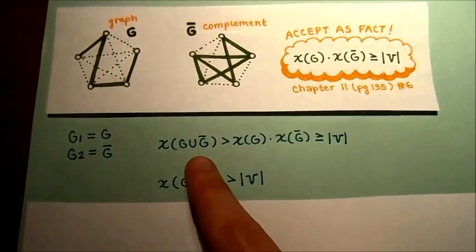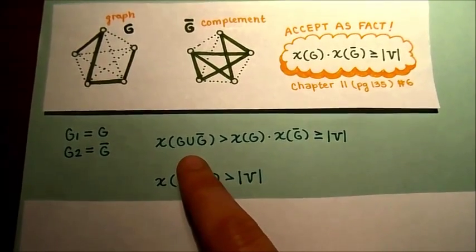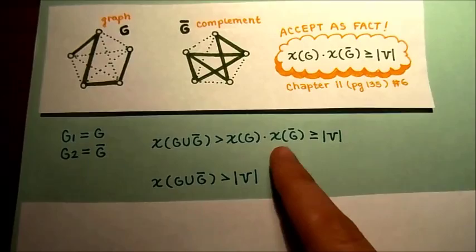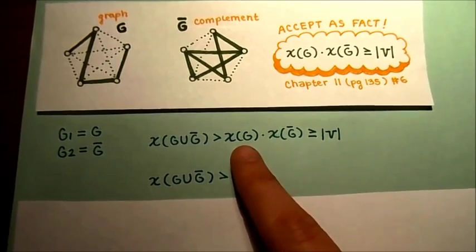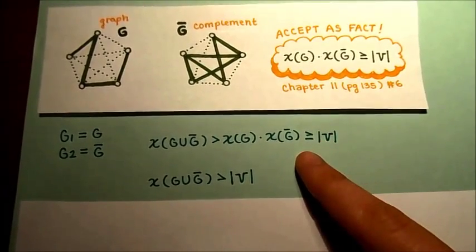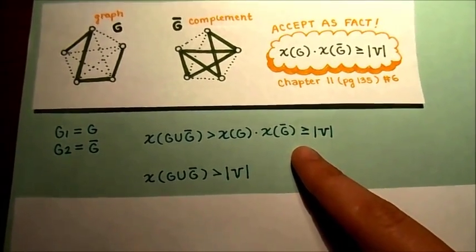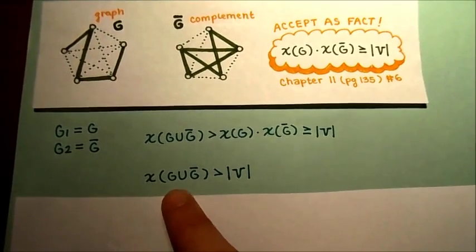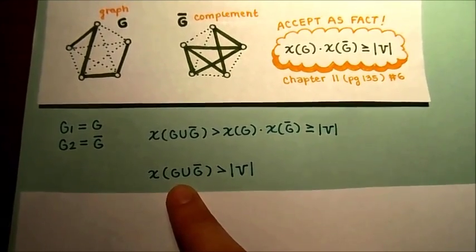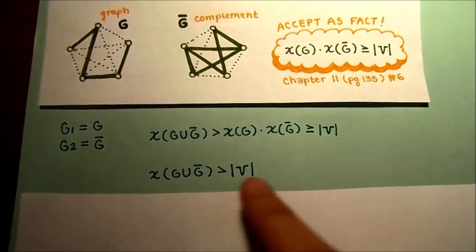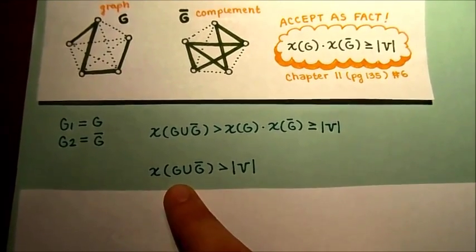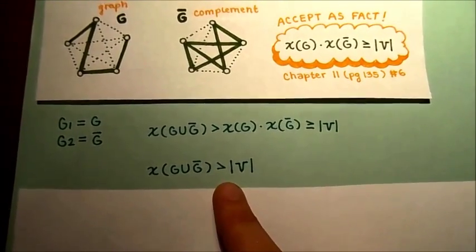Then χ(G1 union G2) is greater than the product of their individual colorings, which by our result is greater than the number of vertices. So the minimum coloring of the union graph is greater than the number of vertices — meaning we need more colors than we have vertices.